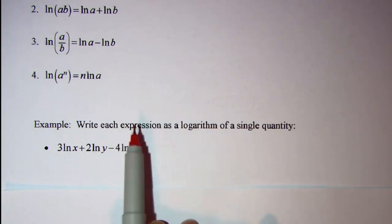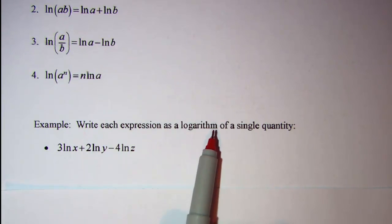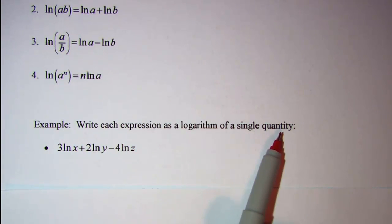Our first example, we're asked to write each expression as a logarithm of a single quantity. So our first example, we have 3lnx plus 2lny minus 4lnz.